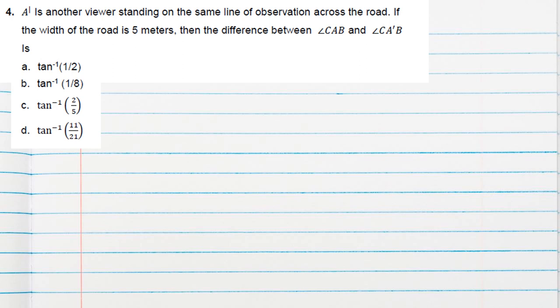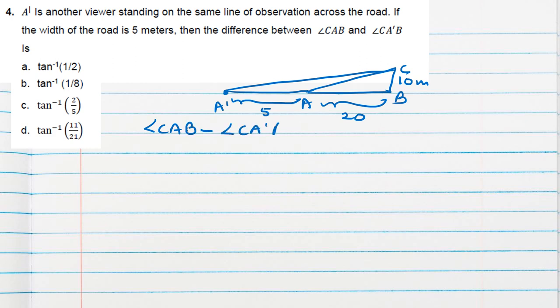Question number 4 is A dash is another weaver standing on the same line. In figure you must have seen that this is A point and somewhere A dash is given. If this width of the road is 5 meter, this width 5 meter given. AB already 20 meter given and CB already 10 meter given. Difference between CAB angle and CA dash B. So angle CAB minus CA dash B. This difference we should find. Already we got this. In first question we got this as tan inverse 1 by 2. This is my theta. Theta is tan inverse 1 by 2. I got in first question of the same case study. Then CA dash B can I find. So yes.